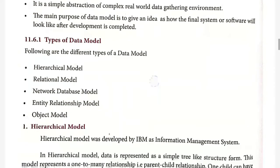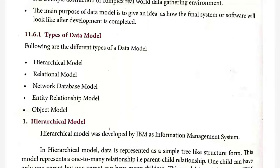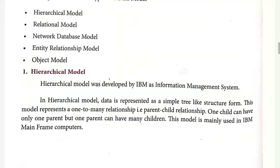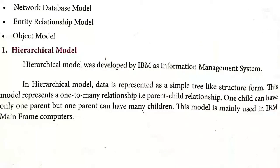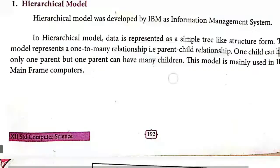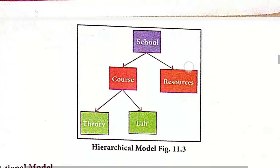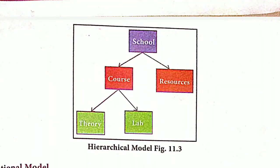There are different types of database models. The first is the hierarchical model, which has a tree-like structure — from the top it divides into two or more branches, and each division is further divided. For example, a school contains different courses and different resources, and courses contain different theory and practical parts.